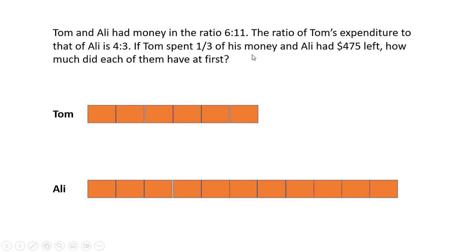If Tom spent one third of his money - in this case Tom's expenditure to that of Ali is 4 units is to 3 units, and we know that Tom spent one third of his money. So in this case there are 6 units. One third of 6 is 2 units here.